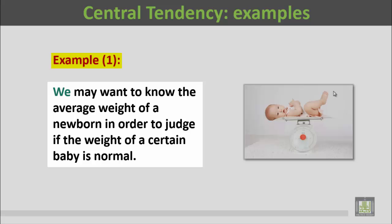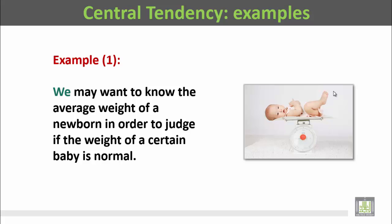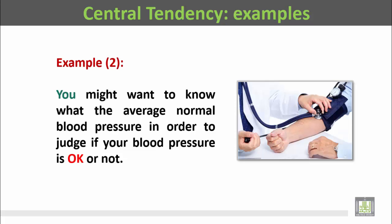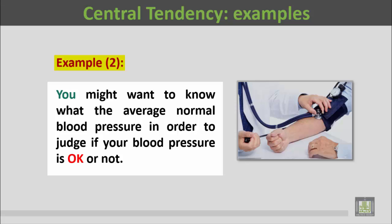وزنه قريب من المتوسط يعني طبيعي، أو بعيد عن المتوسط يعني غير طبيعي. Another example: you might want to know the average normal blood pressure in order to judge if your blood pressure is okay or not. كي تعلم إذا كان ضغط دمك طبيعيا أم غير طبيعي، يجب عليك أن تعرف ما هو ضغط الدم الطبيعي المتوسط كي تقارن ضغط دمك بهذا المتوسط.